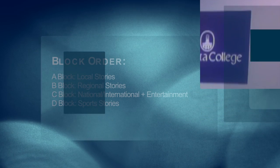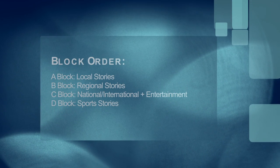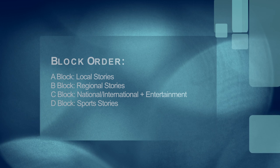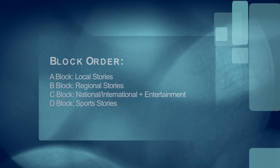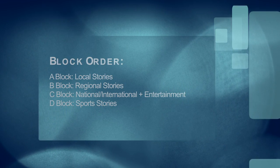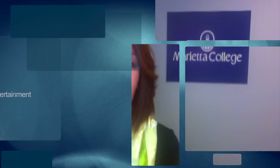Remember this block order for your stories: A block is local stories, B block is regional, C block is international or national and the entertainment package, and D block is sports stories. Generally our teases don't change that dramatically, so working off of the example script just makes things a lot easier and you don't reinvent the wheel.